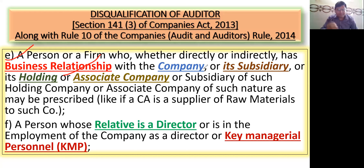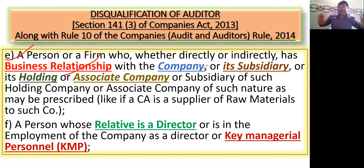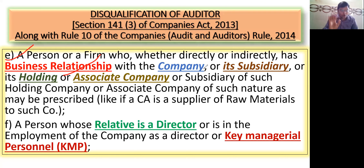For example, if I'm a supplier of raw material to that company, then I'm not going to become its auditor. Finished. This point is simple — it's about business relationship.